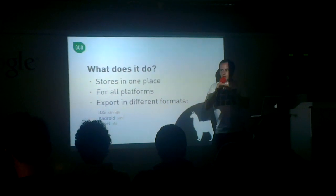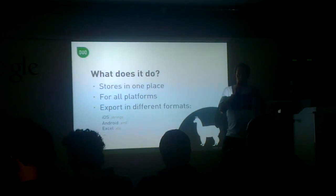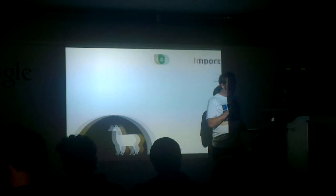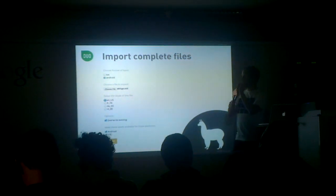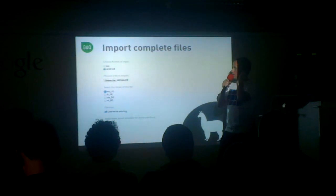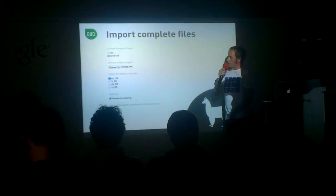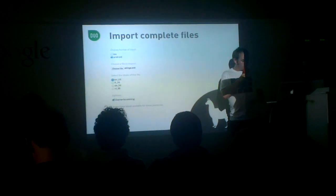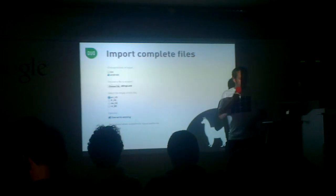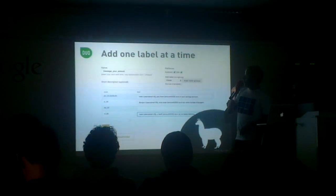In the next couple of slides, I'm going to show you how it works with some screenshots — the whole process of using Llama. If you want a quick start, just import a complete file. Select, for example, an Android format strings.xml file, specify the locale such as English US, add some other options, and then import it.